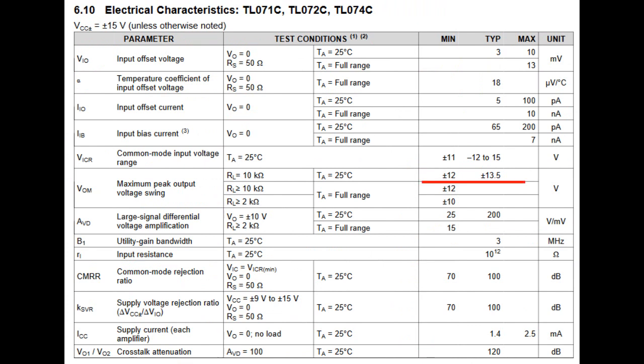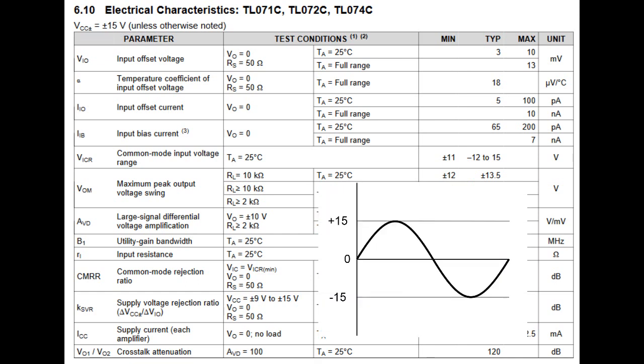The datasheet of the TL072 tells a different story. The output voltage is given as an output swing. The test condition for this parameter is done at supply voltage of negative and positive 15 volts. This means a range of 30 volts in total.